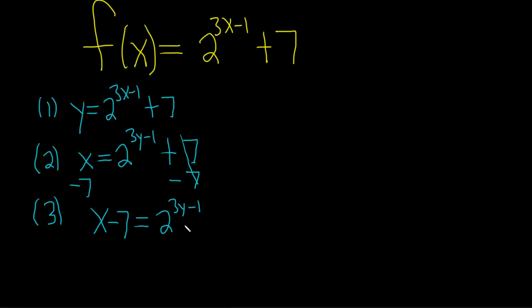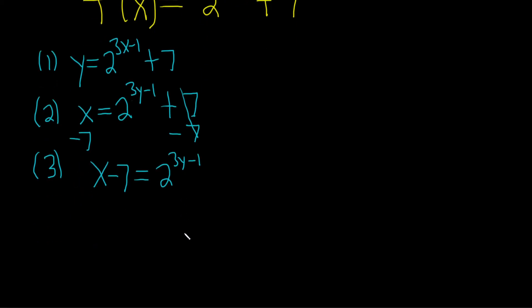Now it would be nice if we got rid of that 2. So what we can do is take the log base 2 of both sides. Log base 2 of x minus 7 equals log base 2 of 2 to the 3y minus 1. What this essentially does is create cancellation. Whenever you have log base 2 of 2 to the x, you just get x. This is super powerful.